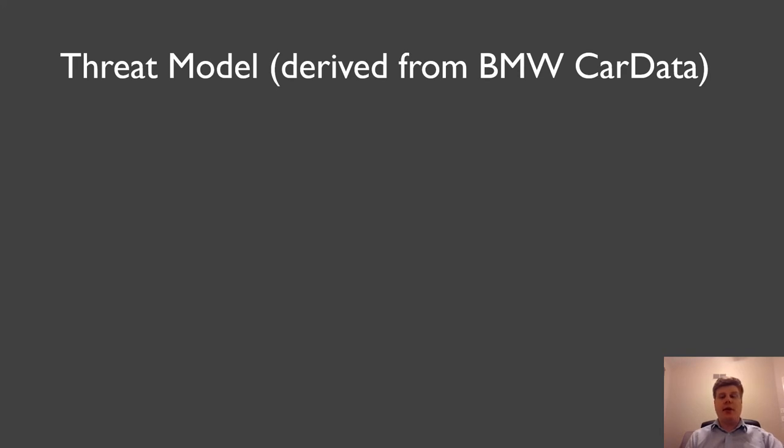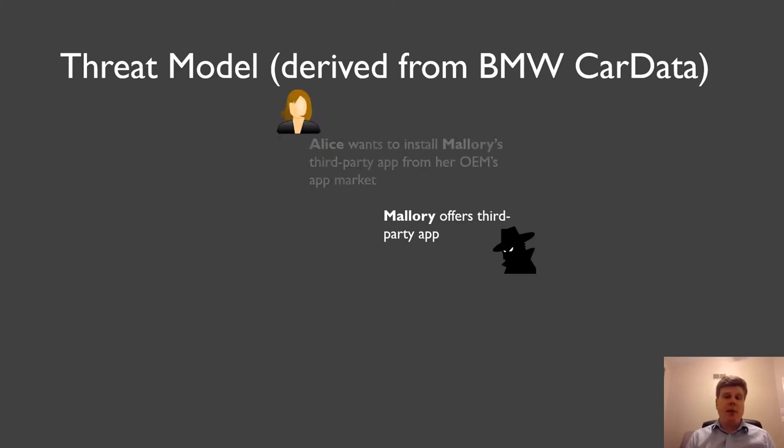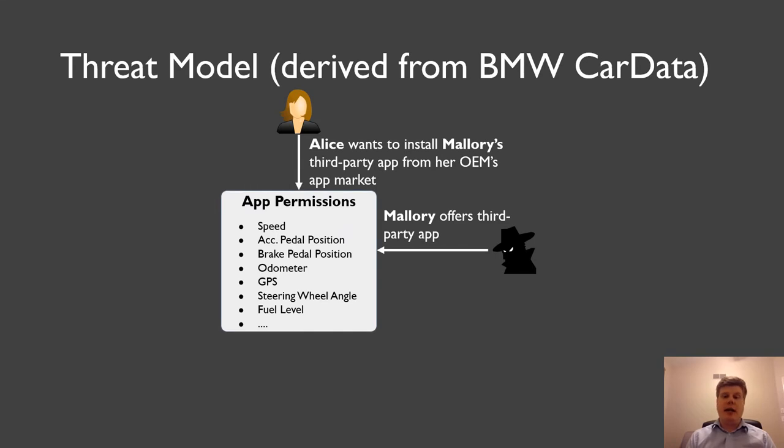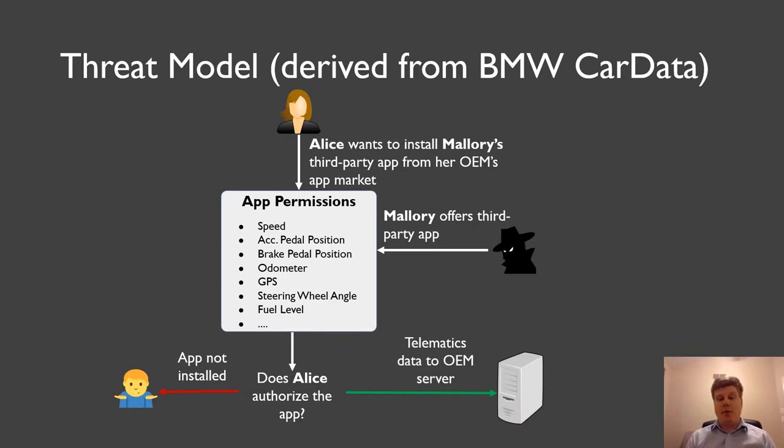And now we have to ask ourselves the question, how is this data collected? And in order to do that, we are going to look at an example that's been derived from BMW Car Data. So we have our third-party application provider, Mallory, and she offers a third-party app. And Alice is the customer of this OEM, and she wants to install Mallory's third-party app from the OEM's App Store. And just like in mobile operating systems, you will see a pop-up dialogue. These are the permissions that this app requires. Are you okay with it or not? Are you going to authorize it? And if Alice decides to authorize the app, the data first will be transferred to the backend of the OEM. And then the OEM will share a copy of this data for further processing to a third-party server over the OEM's business-to-business interface.